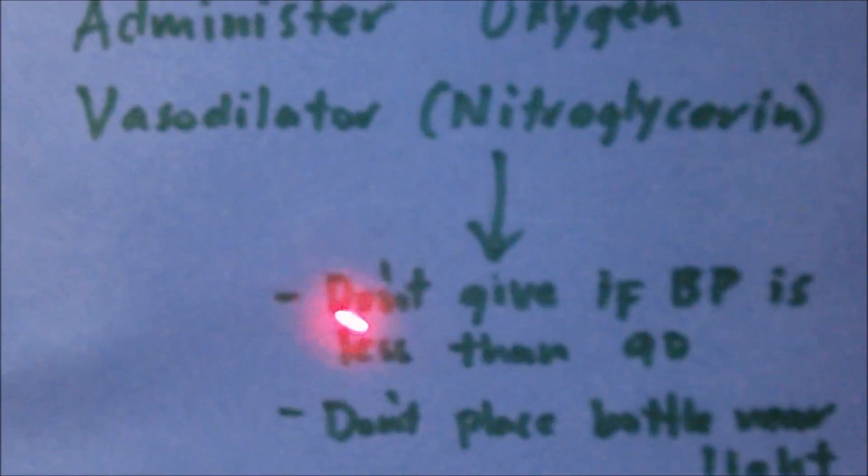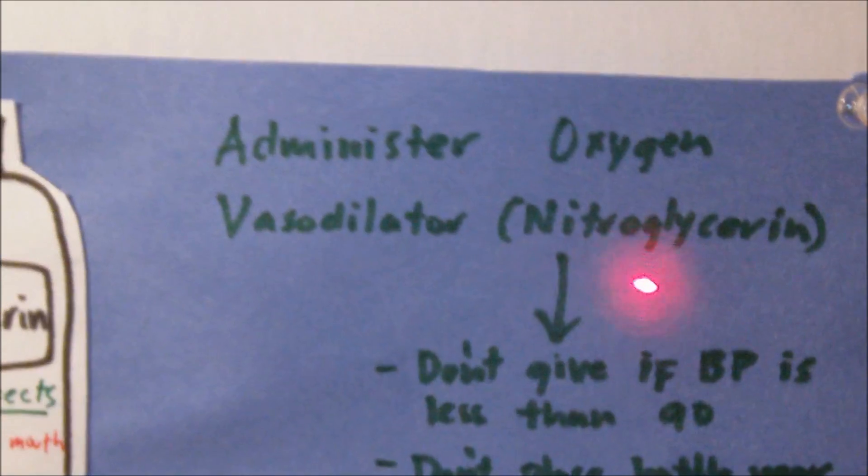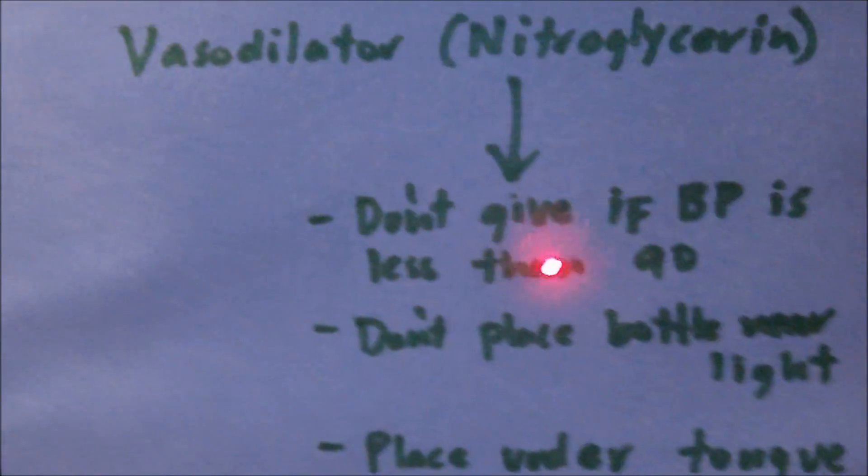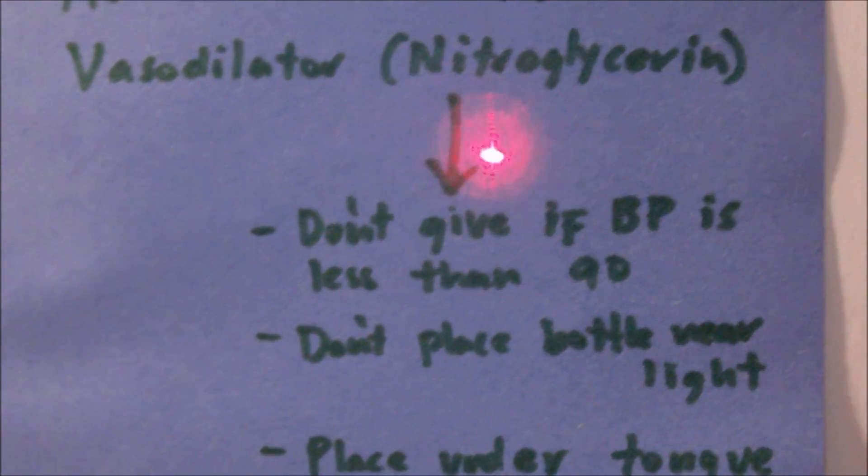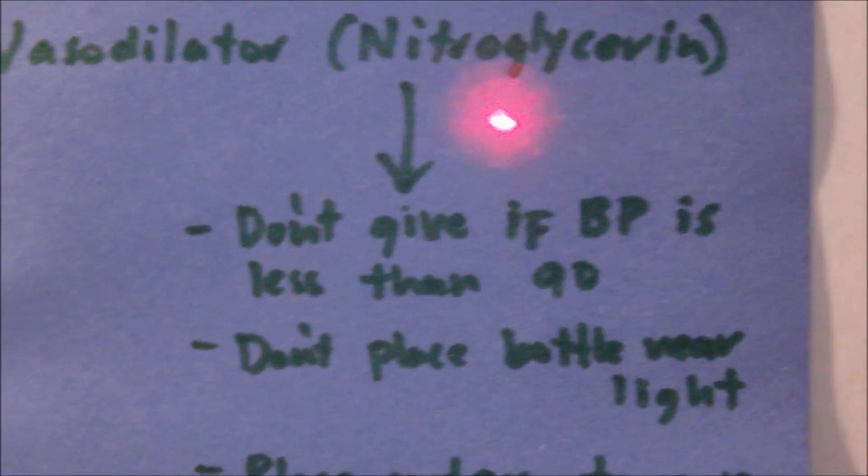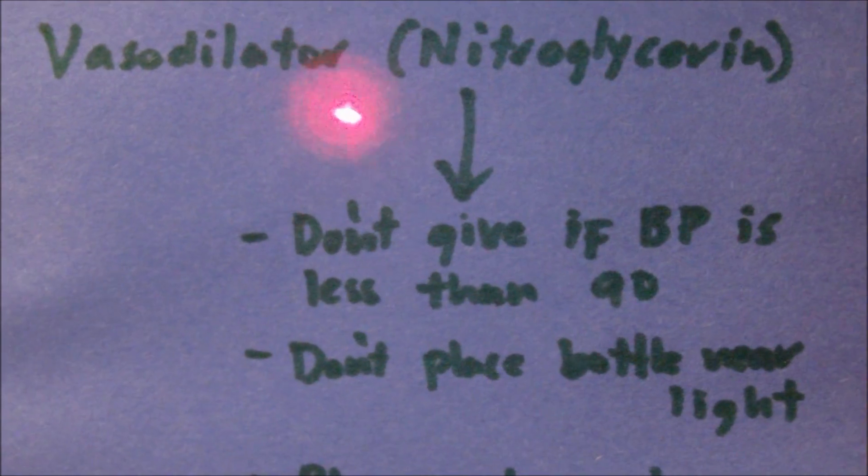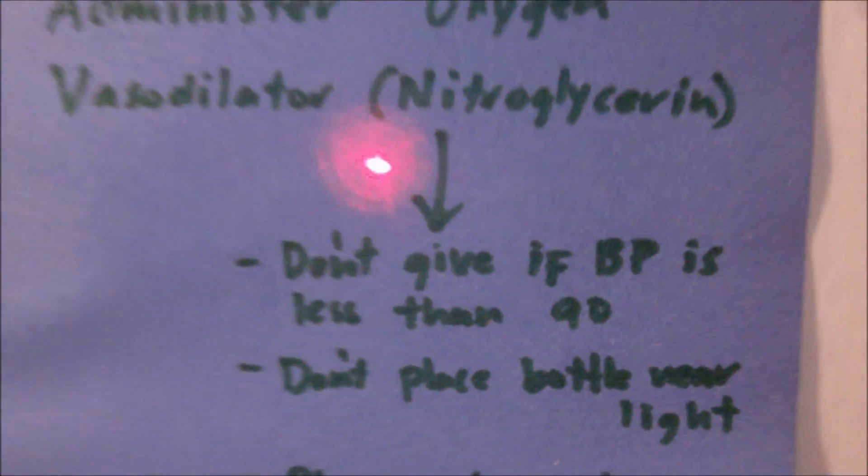We can also give the patient a vasodilator. The drug of choice is nitroglycerin. A vasodilator basically helps with the coronary artery vasospasms. It also reduces the preload and afterload of the heart, which decreases the myocardial oxygen demand of the heart.